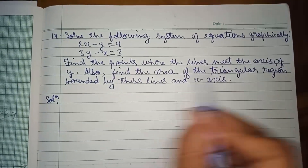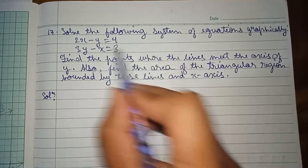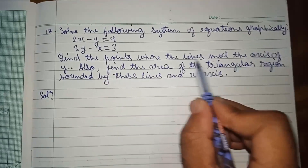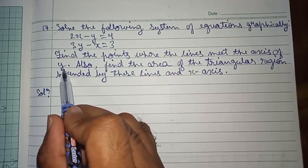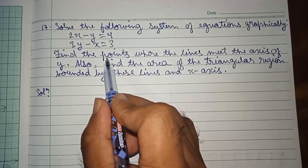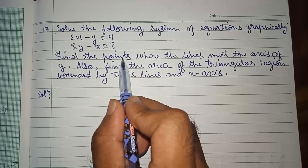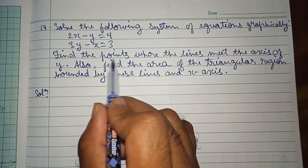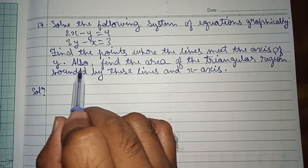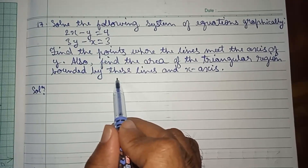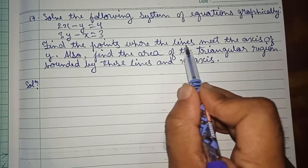Find the points where the lines meet the axis of y. Also, find the area of the triangular region bounded by these lines and the x-axis.